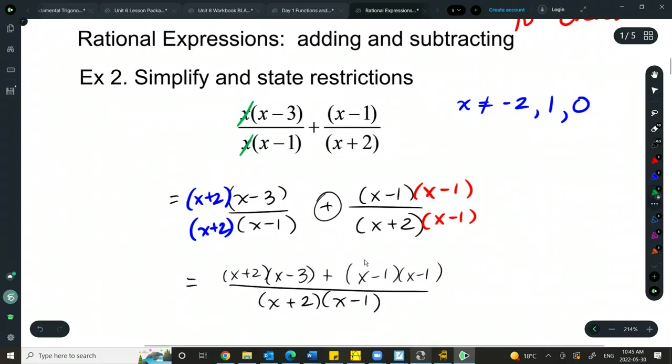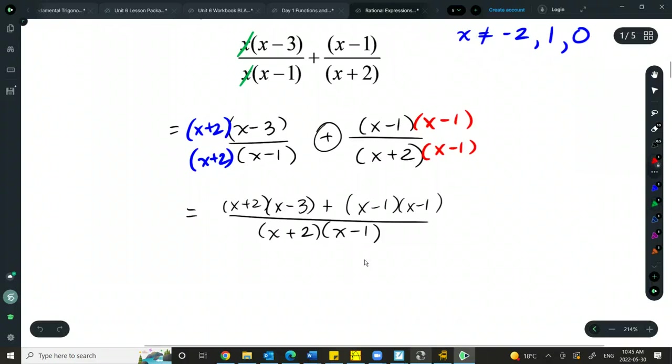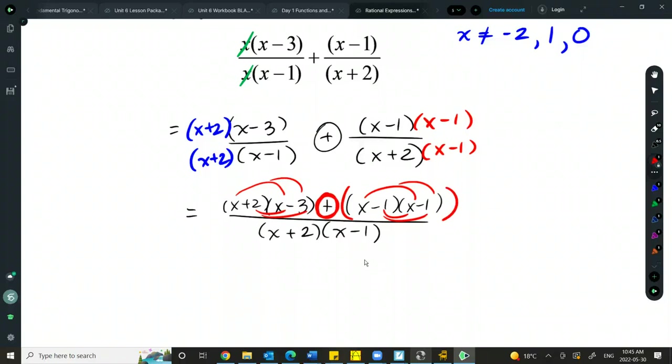From here, you want to resist the urge to start cancelling at this step. We cannot do this because I'm adding terms. If it was all multiplication on top, that would be okay. But in this case, it's not. So instead, we're going to foil out the top on each side. Big difference here between addition and subtraction is that if this is subtraction, I must leave my expansion of this in brackets and distribute that subtraction into everything in that second expansion. If it's addition, after this step, I can just drop the brackets around that second and first part.